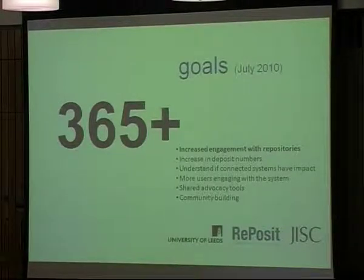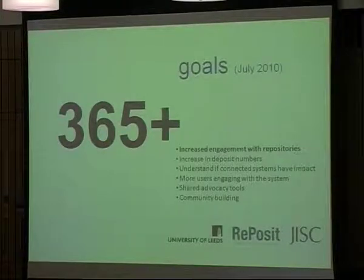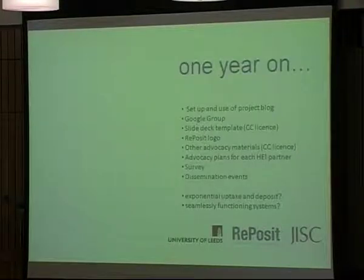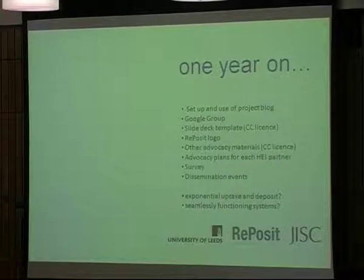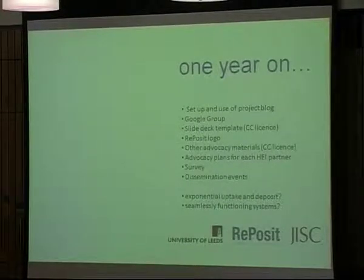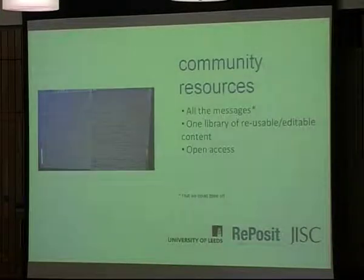From our goals of last July to this July, they're pretty much the same. Timescales have shifted a bit — we thought everybody would be in full production, but we're not. We're about to go full production; Queen Mary finally has the repository up and running. But one year on, we actually have more of the objectives delivered. The Google group is up and running, and at the last RSP event more people have joined up, so there's a link at the last slide — please join up and start engaging with that if you want to bring together the CRIS Repository community.